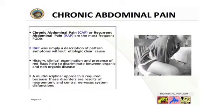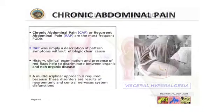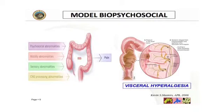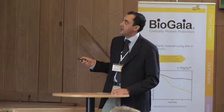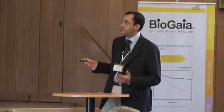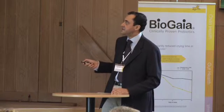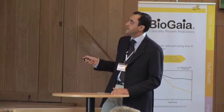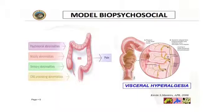The most important condition is chronic abdominal pain in functional gastrointestinal disorders, also called recurrent abdominal pain. When we speak about chronic abdominal pain, we consider a model where symptoms are the result of psychosocial abnormalities, abnormalities of intestinal motility and sensory motility, and the final result is visceral hyperalgesia, which is considered the most important mechanism in this condition.